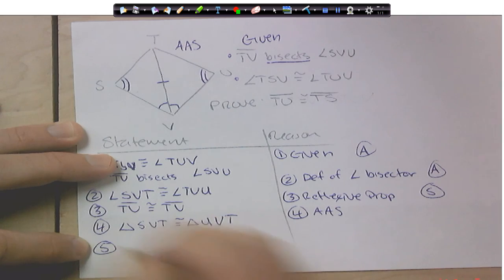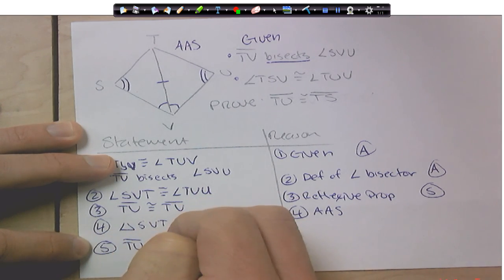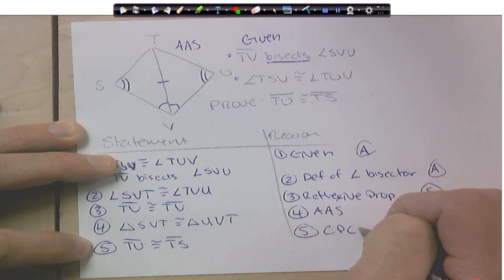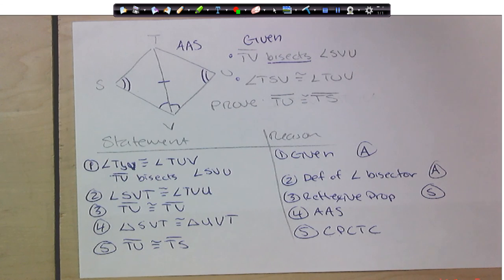So, let's go ahead and write that down. So, TU is congruent to TS. Why? Because of CPCTC. Again, corresponding parts in congruent triangles, or of congruent triangles, are congruent. Okay? And that's it. Hope you guys enjoyed the video. We'll see you.